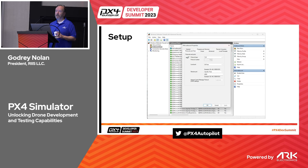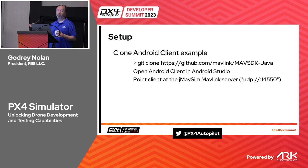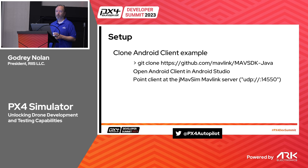Now I need something to point jmavsim at. I clone the Mav SDK - that's the whole Mav SDK in Java. I'm using Java, and there's no reason why you couldn't use Swift. The easiest thing out of the box is Mav SDK Java. Then you just open the Android client in Android Studio. What we want to do is instead of pointing at the Mav Link server, we want to point it at port 14550, which is where we were before.